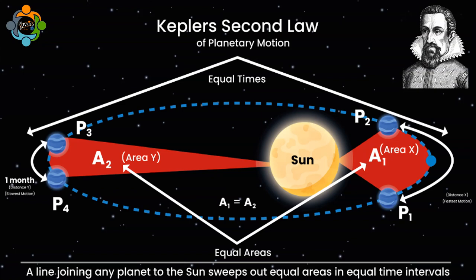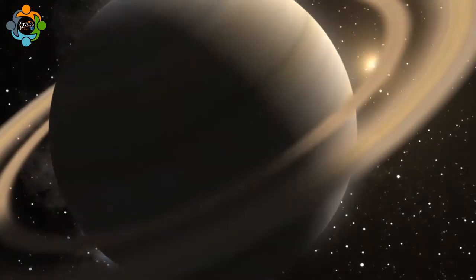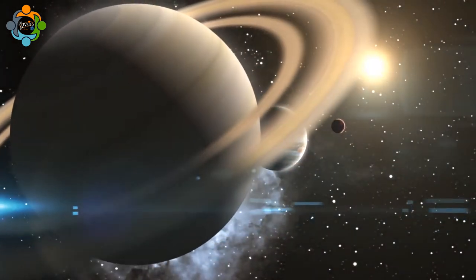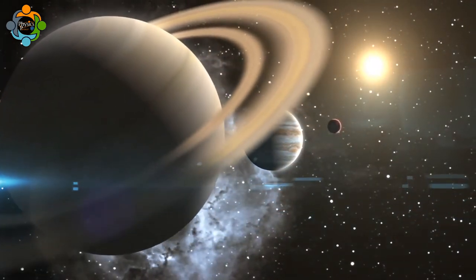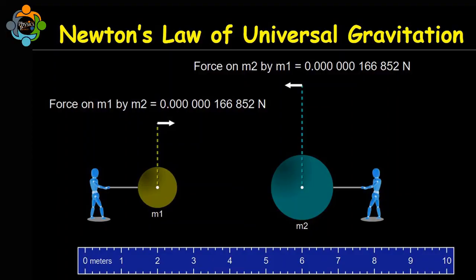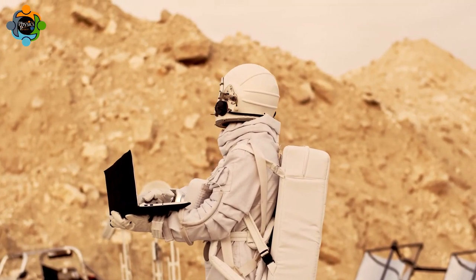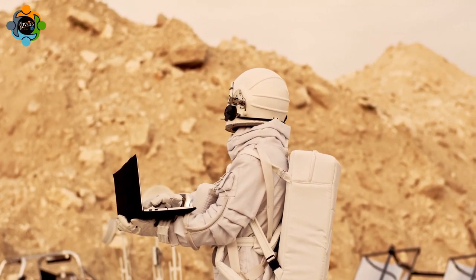The significance of Kepler's second law cannot be overstated. It provided a mathematical explanation for the irregular motion of planets observed by astronomers for centuries. By showing that planets do not move at a constant speed but instead accelerate and decelerate as they orbit the Sun, Kepler's law helped pave the way for Isaac Newton's law of universal gravitation.